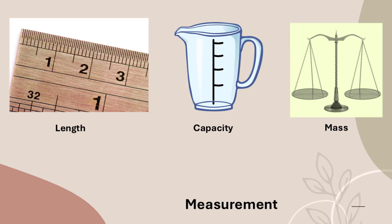The quantity of liquid which a container can hold is called its capacity. The standard unit of measuring capacity is the liter. Small amounts of liquids are measured in milliliters and large amounts in liters. A measuring cylinder is used to measure the amount of liquid.